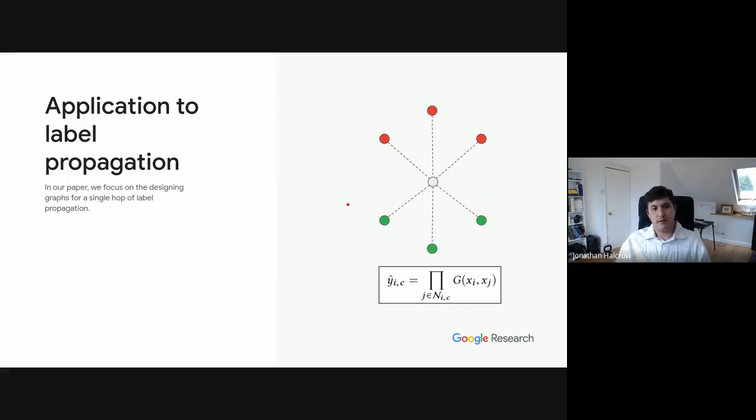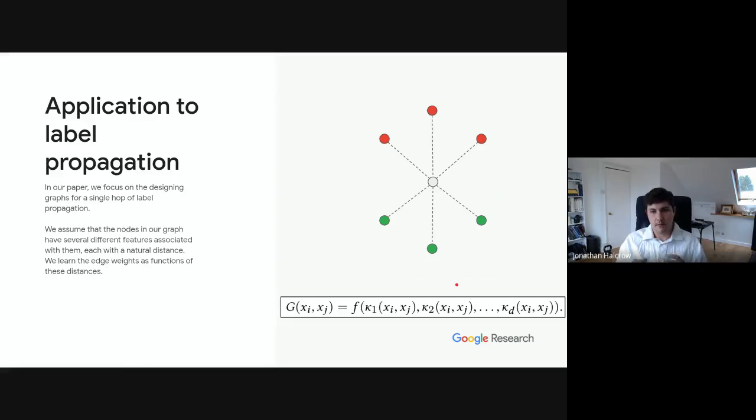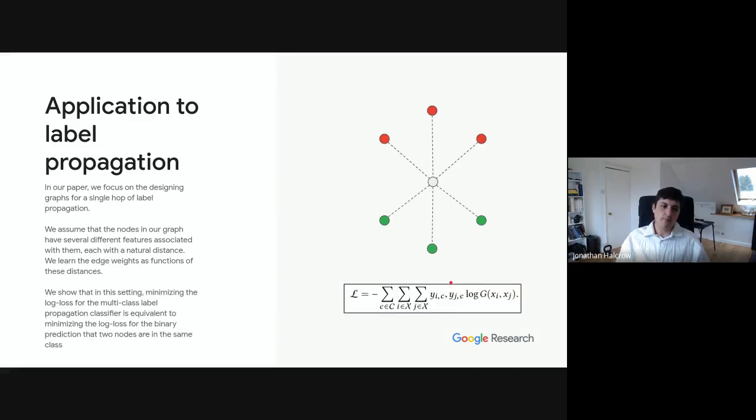In the paper, we're focusing on designing graphs for a single hop of label propagation. You can imagine generalizing this to other different types of graph learning algorithms you might try. In particular, we're choosing a label propagation rule that looks like this belief propagation type rule, where we choose a score for a particular node in a particular class as just the product of the edge weights between that node and other nodes in that same class. We assume that the edge weighting function that we're trying to design is just a function of these natural distance measures that we already have. And so we're trying to learn some function that combines these in an optimal way. And what we show in the paper is that in this particular setting, the choice of edge weighting function that minimizes just the log loss of the multi-class classifier is equivalent to actually just trying to minimize the log loss of the binary prediction of whether or not two nodes are in the same class.